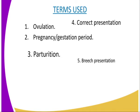Then we have parturition. Parturition refers to the act of giving birth — that process of giving birth is what we refer to as parturition. Then we have correct presentation. Correct presentation means that whenever livestock is giving birth — for example, a cow — the four limbs should come out first, with the head lying in between the four legs.